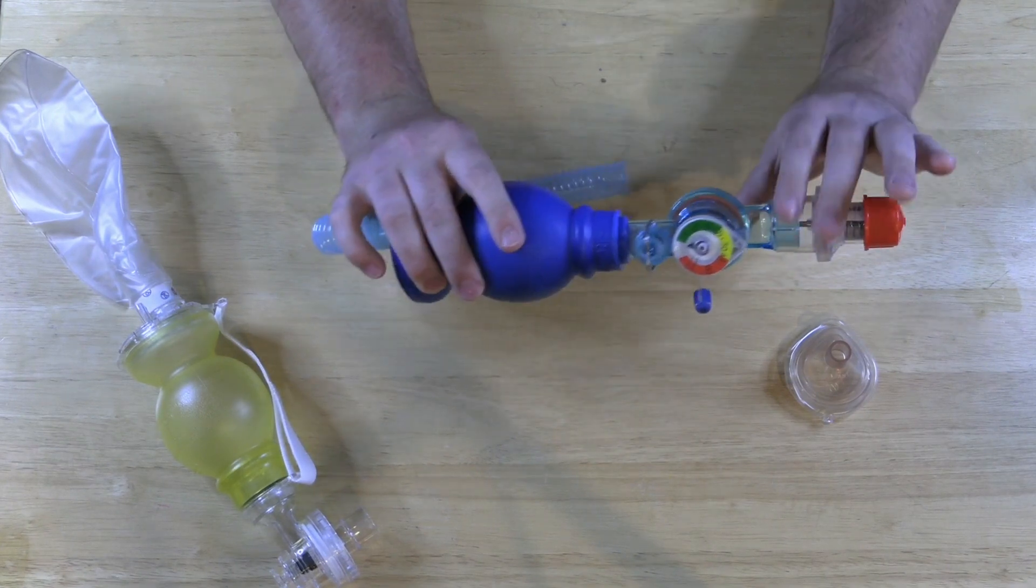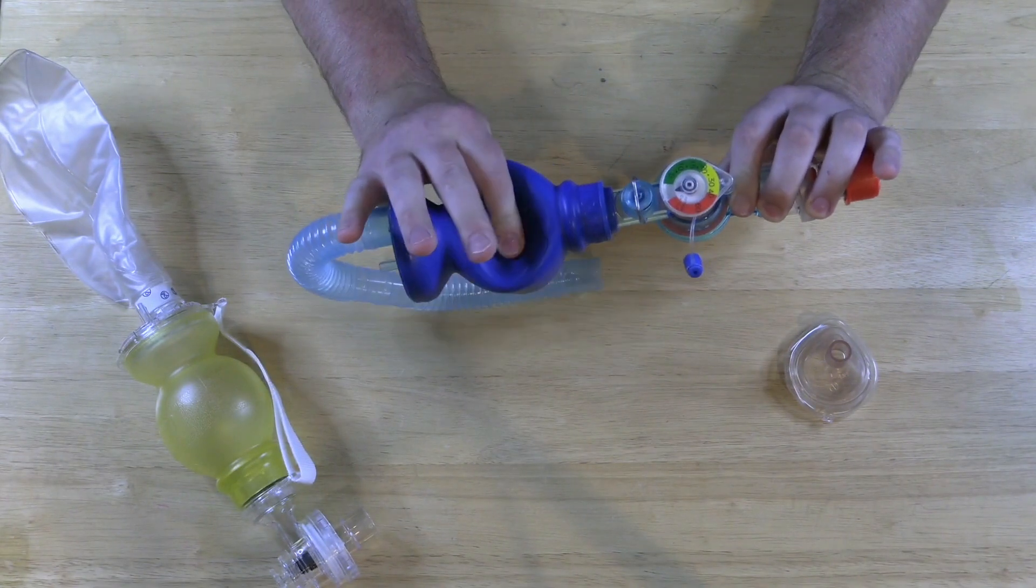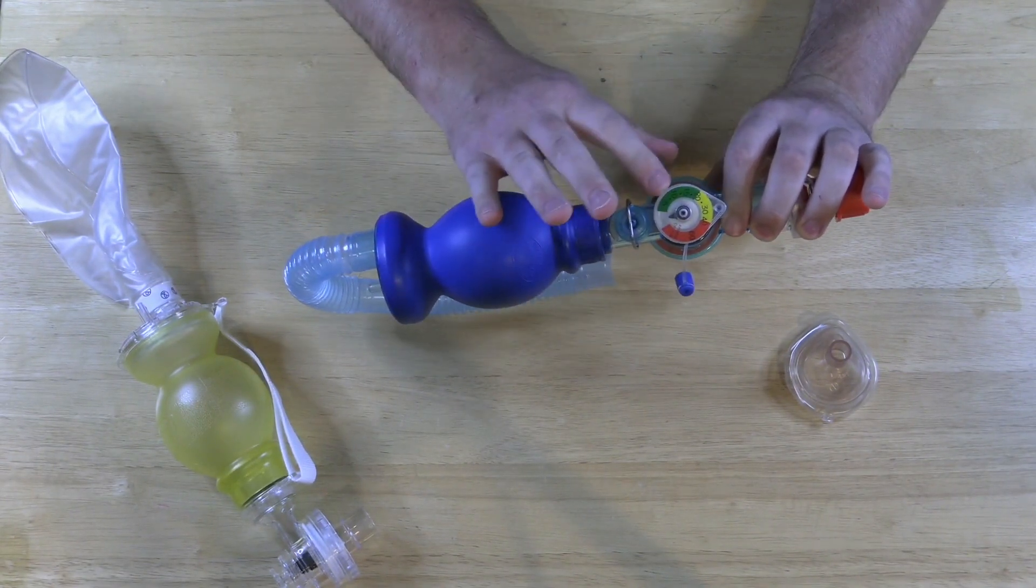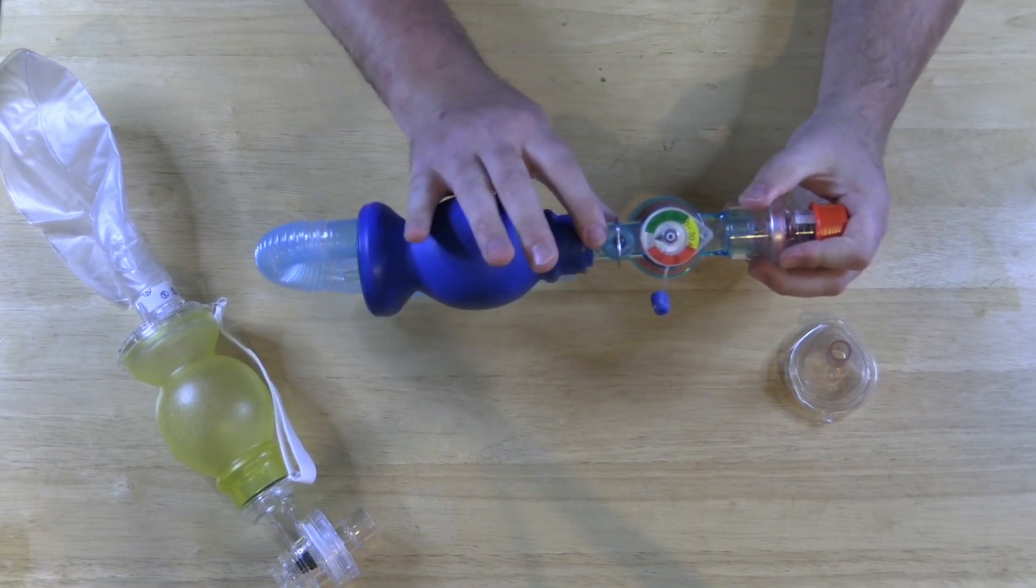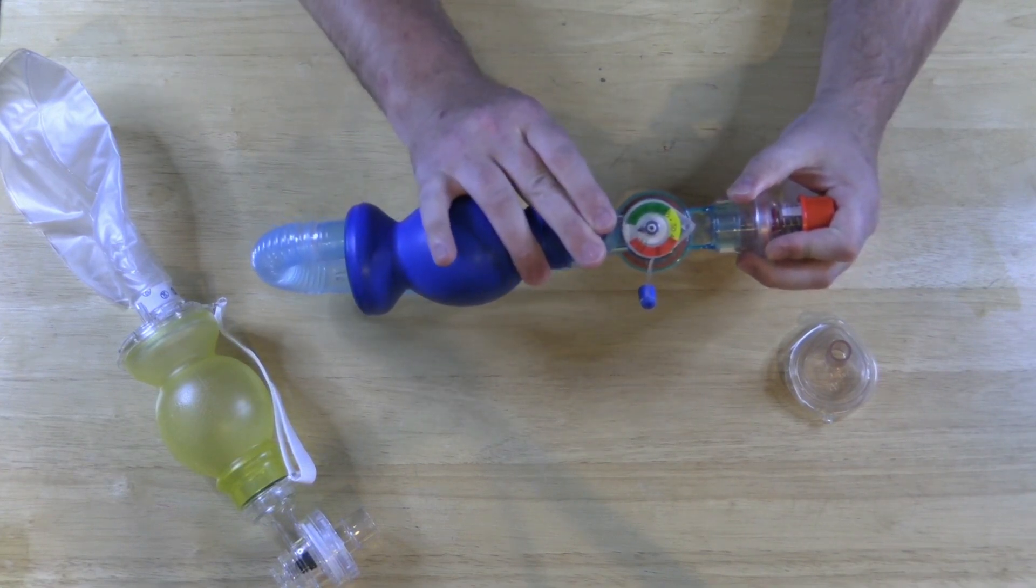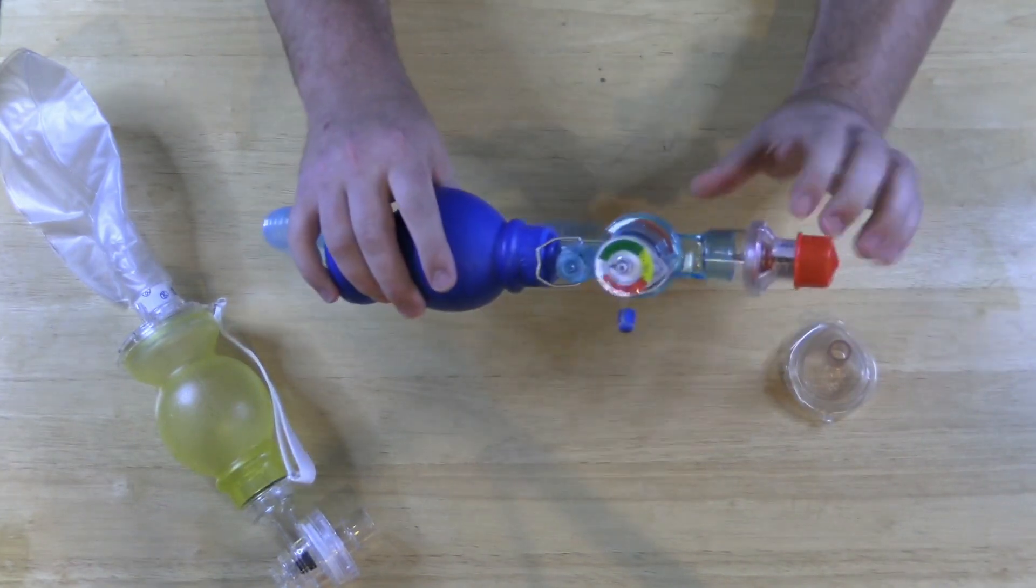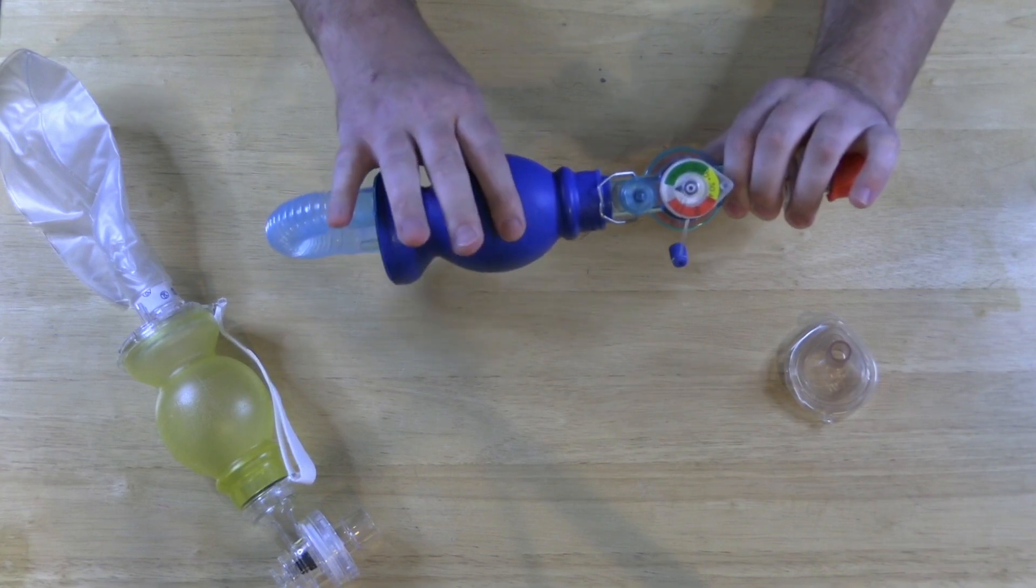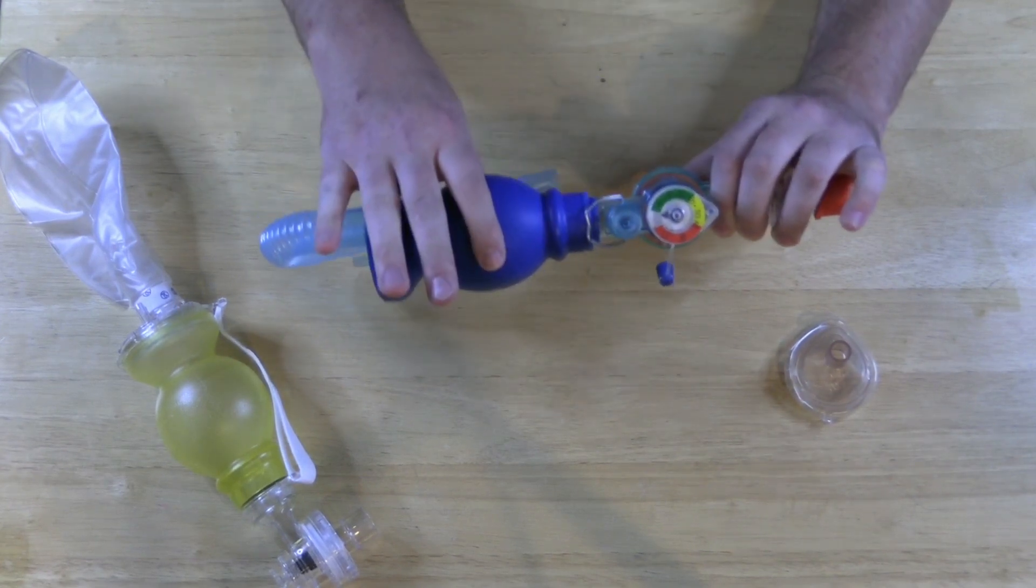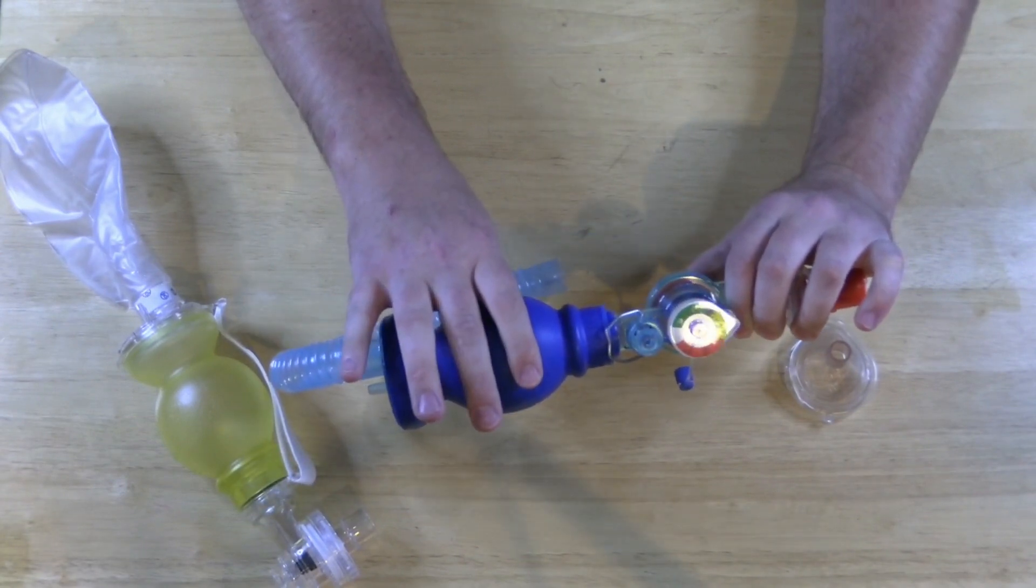Now you can see if I occlude this here as I squeeze the bag you're going to see a certain amount of pressure. You see the little needle flipping back and forth there. Now this right here is a pop off valve set to 40 centimeters of water of pressure. So if I occlude this you're going to see that this thing pops off. You can even hear it.